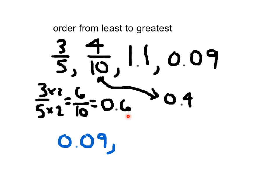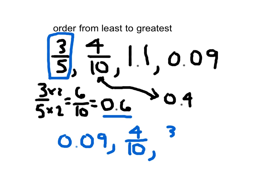For the next number, we're comparing 6 tenths with 4 tenths, and we know that 4 tenths comes before 6 tenths. The thing to remember is that we're going to have to give it back in the same form it was originally written — otherwise someone might look at it and be confused. So since it was written in fraction form to begin with, we write it in fraction form as well. We know 6 tenths was equivalent to 3 fifths, so that's what we write next. And then finally we have our last number, 1 and 1 tenth.